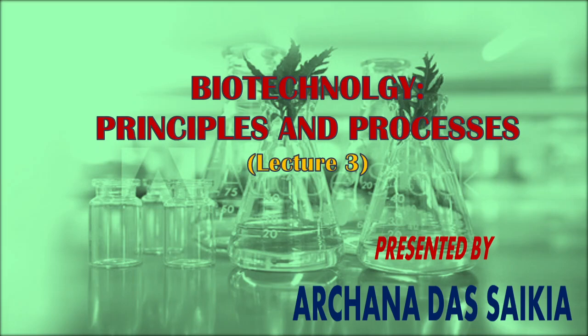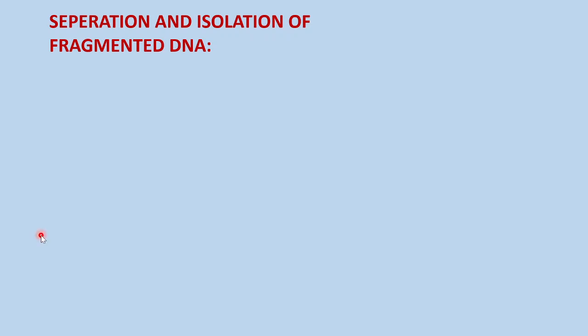In the third lecture on biotechnology principles and processes, we will further move ahead to discuss the steps used in biotechnology. We have already learned about identification and cutting of fragments using restriction enzymes. After cutting of the DNA — the desired DNA as well as the plasmid — we now have to find out which is the actually desirable gene, isolate it, and separate it out. That separation and isolation of fragmented DNA is the topic we will talk about today.